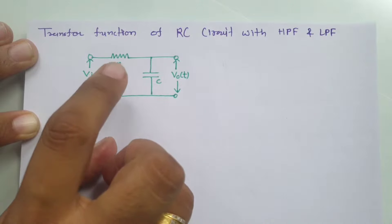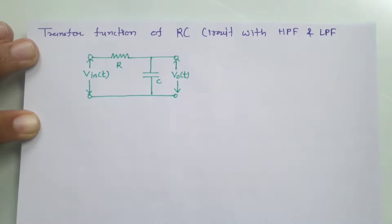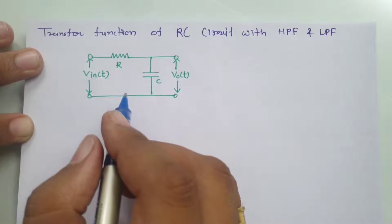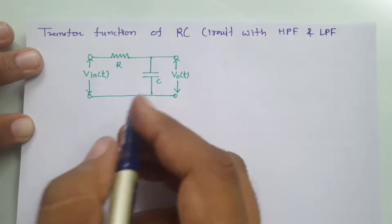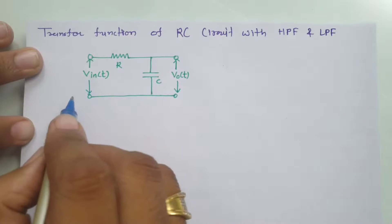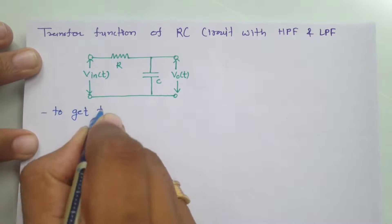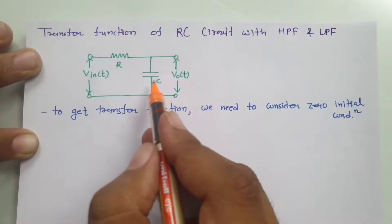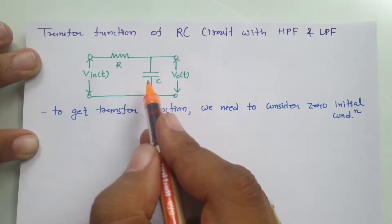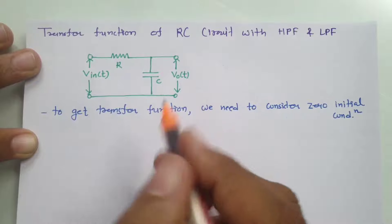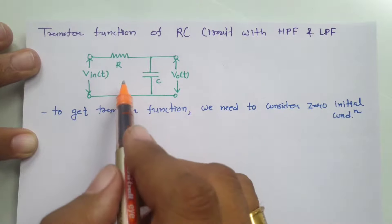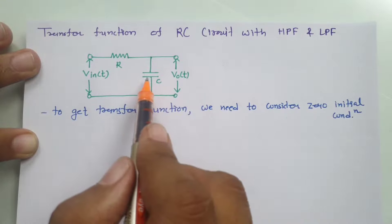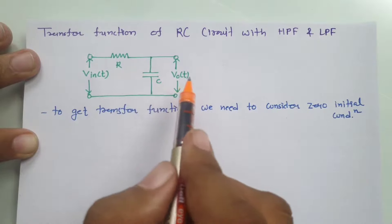Let us try to derive the transfer function of this circuit. When you want to derive the transfer function of any circuit, you just need to consider zero initial conditions if not given. To get the transfer function, we will be considering zero initial conditions, meaning this capacitor is not charged initially. We need to have all the components in the frequency domain, or we can say in the Laplace domain.